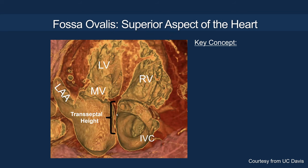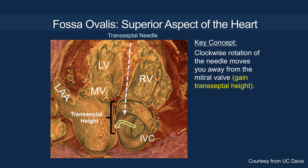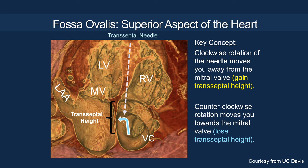In terms of height adjustment, to gain more height you need to move the device more posteriorly. With the transeptal needle, to gain height you clock the device, and if you need to lose height you counter-clock the device, because the device is pre-curved.